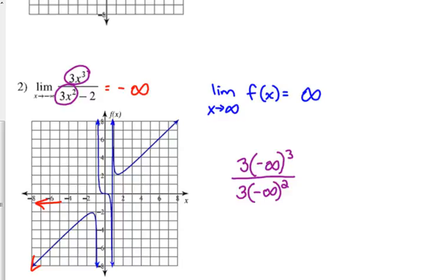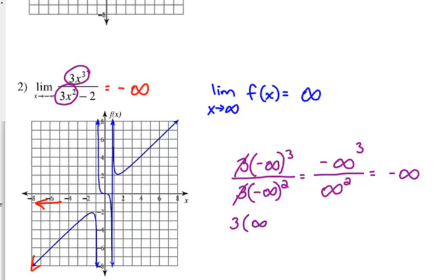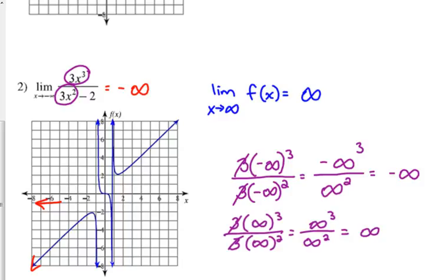When we cube a negative number, the result is negative. Those 3's cancel with each other, so we get negative infinity cubed on top. When we square a negative number, it becomes positive. We can simplify our powers — the x³ over x² leaves us with x to the first, and there was a negative, so that's where the negative infinity comes from. Doing the same with positive infinity: the 3's cancel, and infinity cubed over infinity squared simplifies to just plain infinity. So that's how we figure it out without a graph.